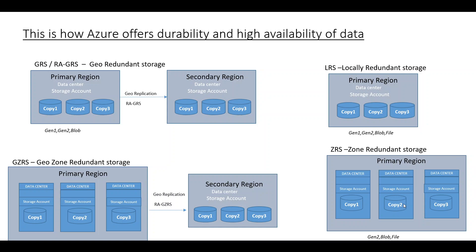But what if there is a disaster in the region itself? Then we have GRS — geo-redundant storage — or RA-GRS coming into picture. RA basically signifies read access, so you have read access on the secondary region created in GRS. This is a replica of locally redundant storage in both the primary region as well as the secondary region: a single data center with three copies of your data in the primary region, and similarly a single data center with three copies of your data in the secondary region.